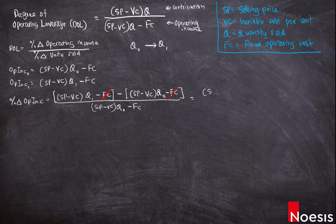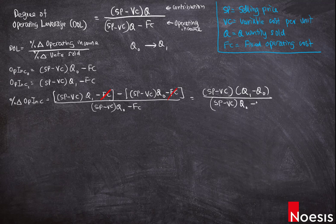This simplifies to: (selling price minus variable cost per unit) multiplied by (Q₁ − Q₀), divided by the operating income at the original sales volume Q₀. We've obtained the numerator, so we just need to substitute this into the formula.